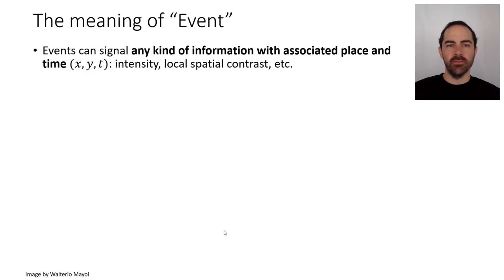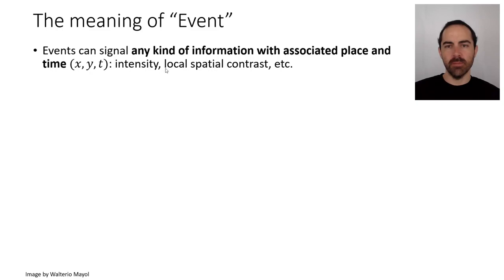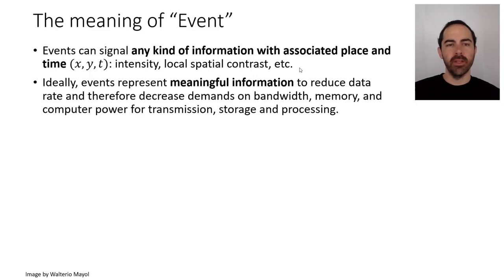What's the meaning of events? Events can signal any kind of information with associated time and place — pixel coordinates and the time the event happened. This could be intensity, local spatial contrast, temporal contrast like the DVS does, etc. Ideally, events represent meaningful data to reduce the data rate and therefore decrease demands on bandwidth, memory, and power consumption for transmission, storage, and post-processing.